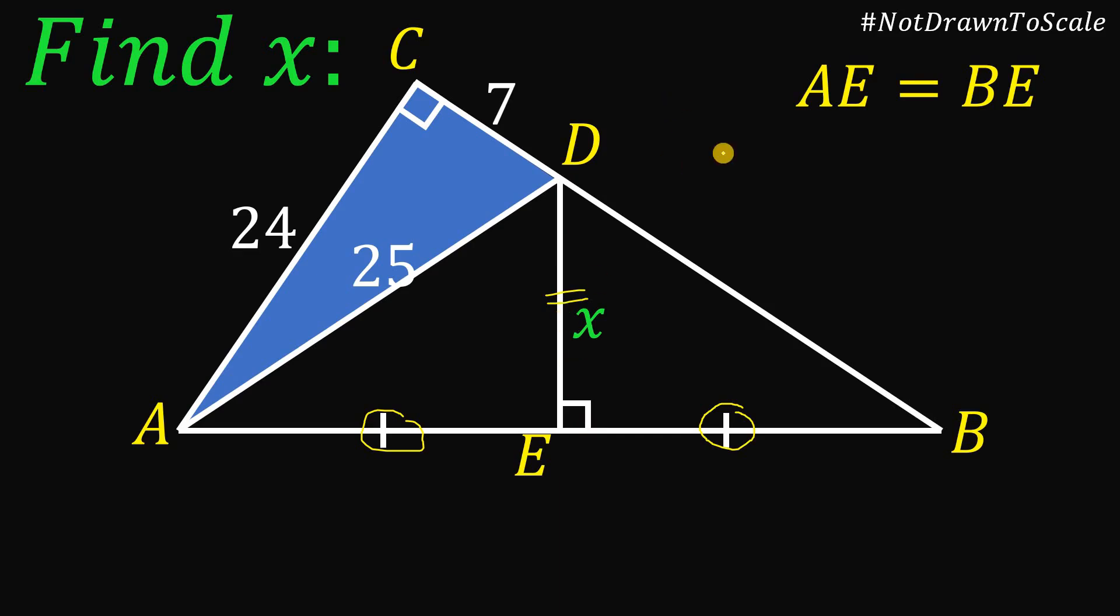Therefore, we can say that triangle AED using leg-like congruence theorem, triangle AED must be congruent to triangle BED. And it follows that segment AD also equals segment BD. By CPCTC, congruent parts of congruent triangles are congruent. So this segment DB must be also equal to 25 units.